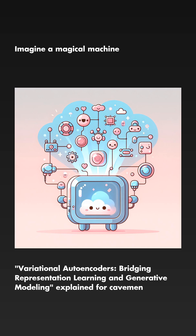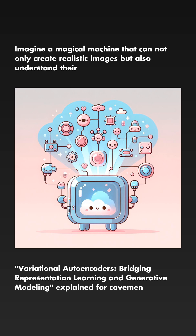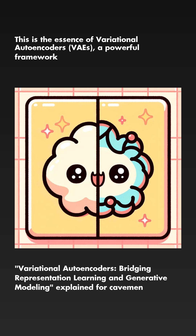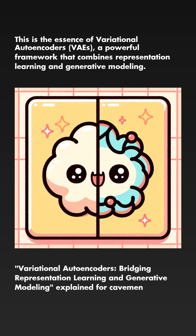Imagine a magical machine that can not only create realistic images, but also understand their hidden structure. This is the essence of variational auto-encoders, VAEs — a powerful framework that combines representation learning and generative modeling.